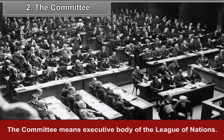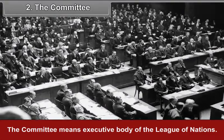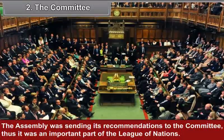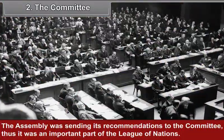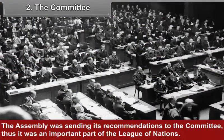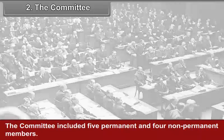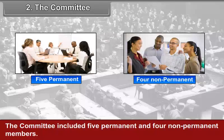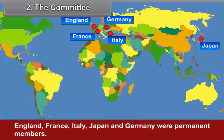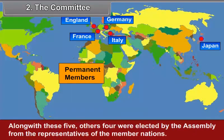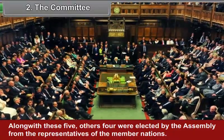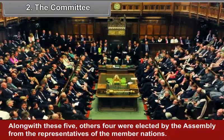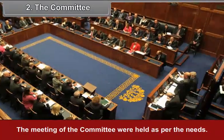The Committee was the executive body of the League of Nations. The Assembly sent its recommendations to the Committee, making it an important part of the League. The Committee included five permanent and four non-permanent members. England, France, Italy, Japan, and Germany were permanent members. The other four were elected by the Assembly from representatives of the member nations. Meetings of the Committee were held as per need.